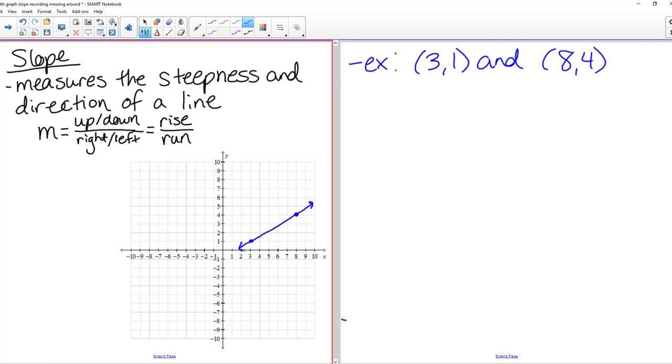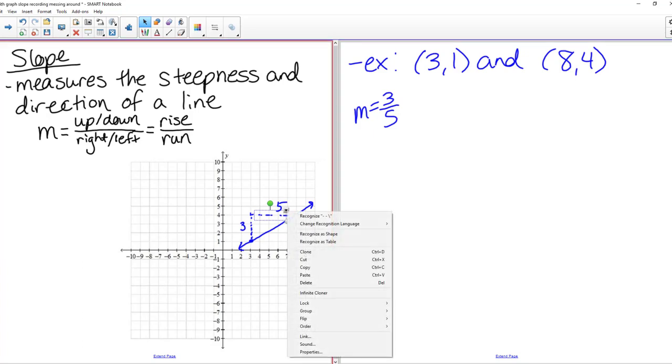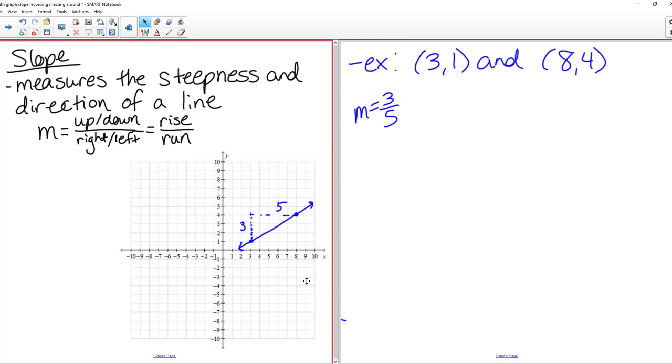So if we figure out how far we go up first, and we always kind of just like reading a book go from left to right. So we are going to go up 3, so we went up 3, and over 1, 2, 3, 4, 5, over 5. So for this example, our slope is 3/5. We got that by doing rise over run, how far we went up to how far we went over.